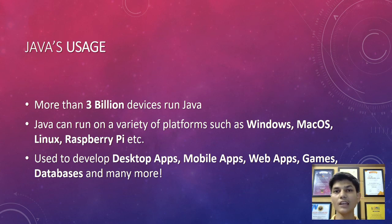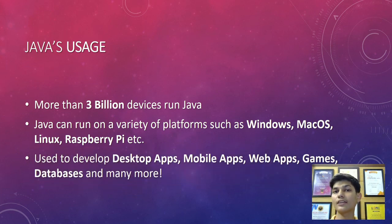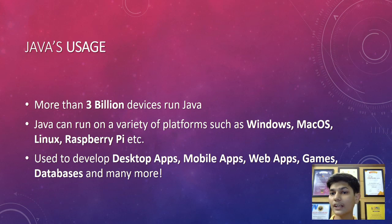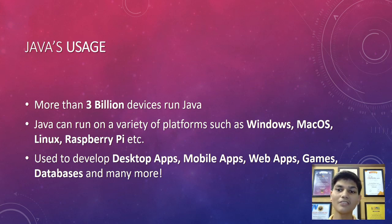Java can be used to develop a variety of things: desktop applications, mobile applications such as Android apps, web applications, games, and database connectivity through JDBC — Java Database Connections. Many more things can be developed in Java as well, including web apps and desktop apps using Java Swing, and Android for mobile apps.